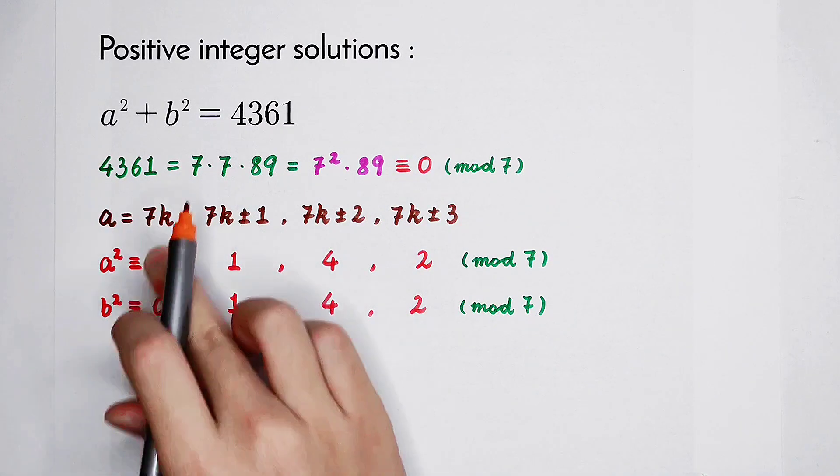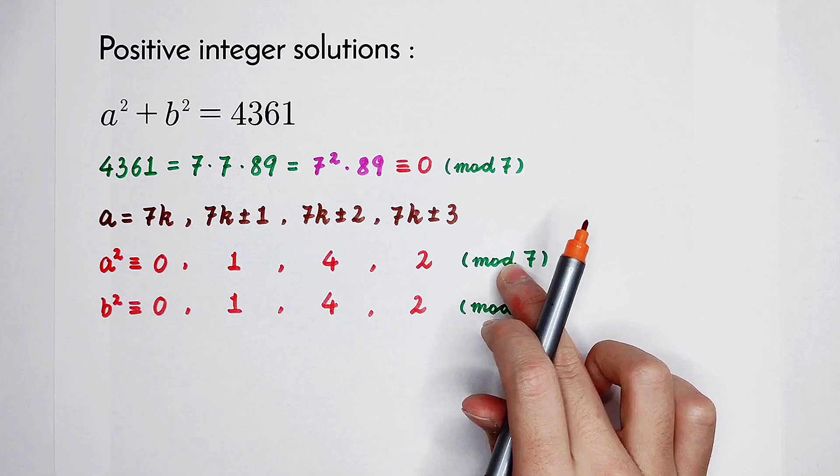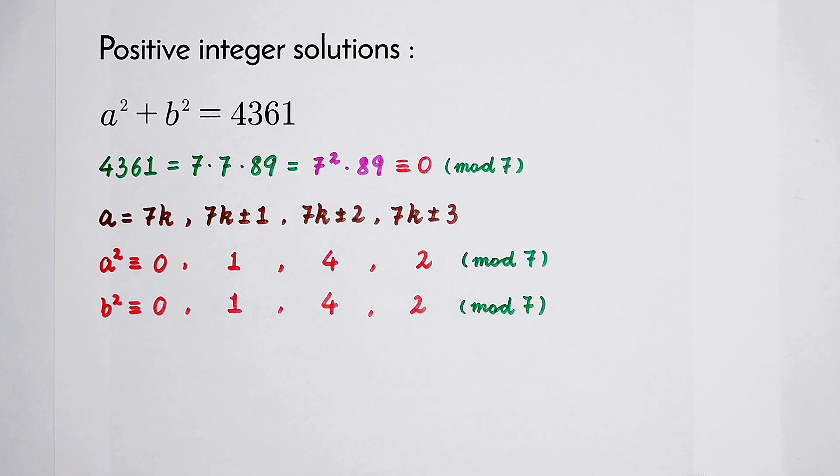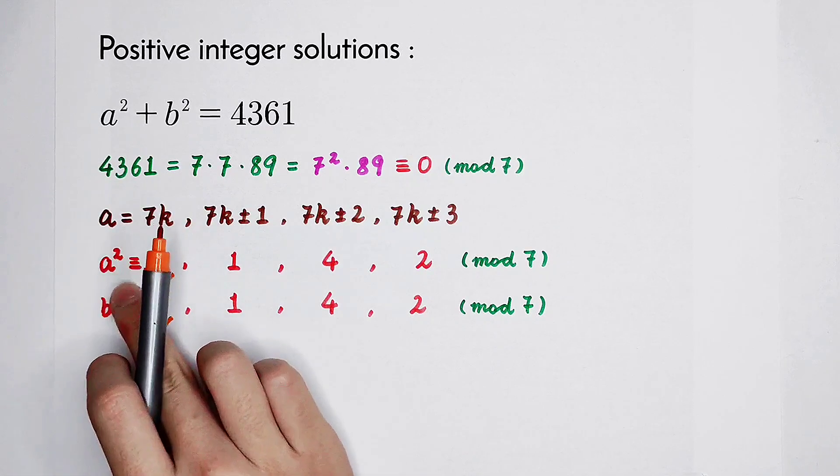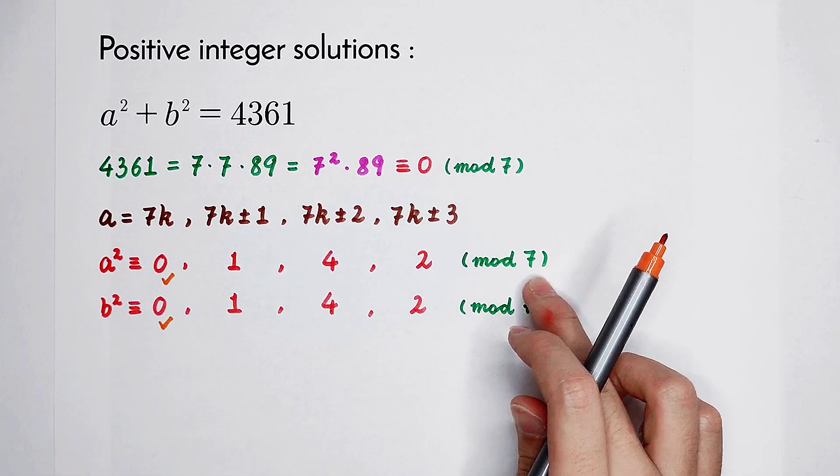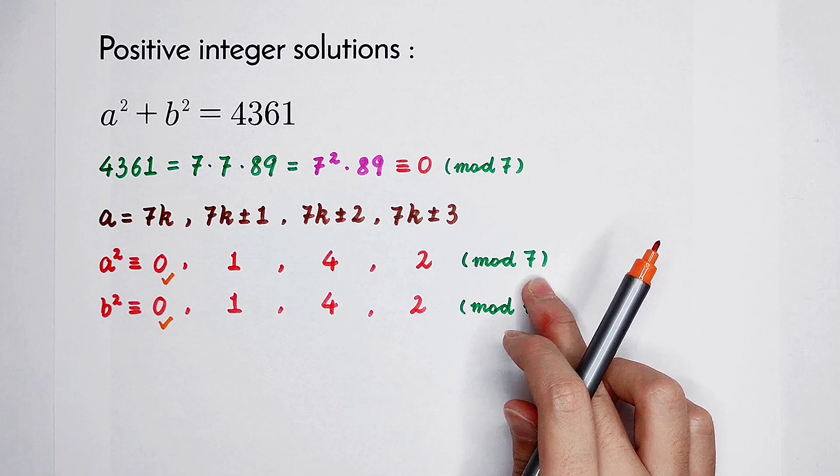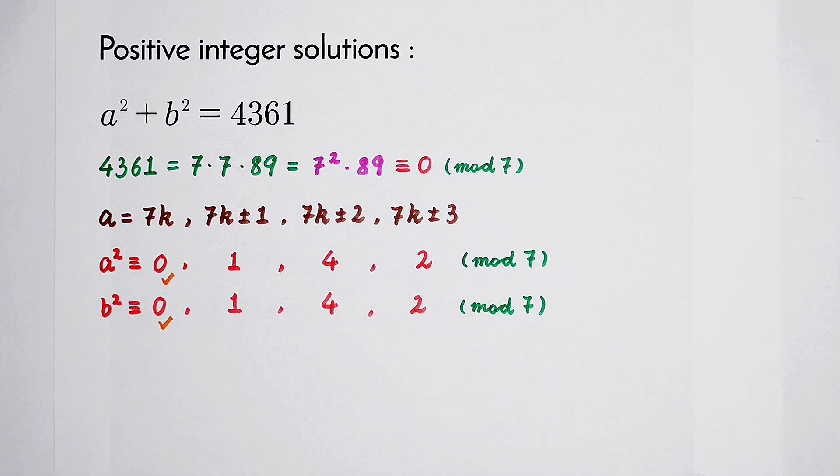If a squared is congruent to 0 mod 7, then b squared should also be congruent to 0 mod 7. If a squared is congruent to 1 mod 7, then b squared should be congruent to 6 mod 7, but there is no 6.